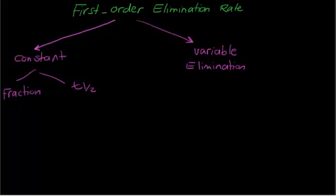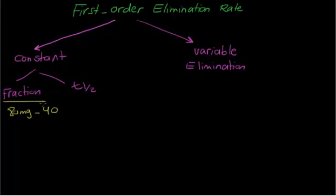Let's take this example: if you give 80 mg of the drug, after one hour it will be 40. It will not be 70, 60, 50 like zero-order kinetics — it will be 40. Why 40? Because a fraction — half — of the drug is being eliminated. The drug was 80, and half of the drug being eliminated brings it to 40. This is the T half-life of the drug.